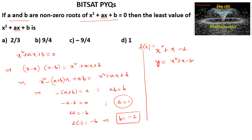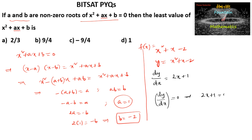Differentiating, dy/dx = 2x + 1. For a minimum or maximum, we set dy/dx = 0, which gives 2x + 1 = 0, so x = -1/2.